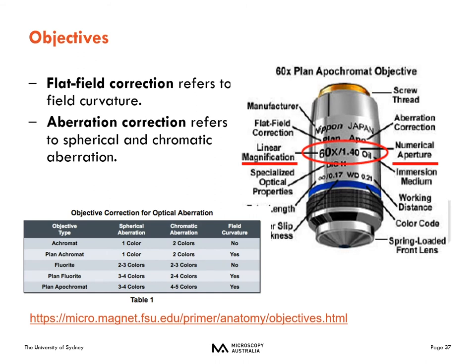The objective type listed on the barrel indicates corrections for optical aberrations — field flatness, spherical aberration, or chromatic aberration. 'Plan' means correction for field curvature. 'Achromat' has chromatic aberration correction but no spherical aberration correction. 'Fluorite' lenses have some chromatic and spherical aberration correction. 'Apochromat' has the most spherical and chromatic aberration correction.